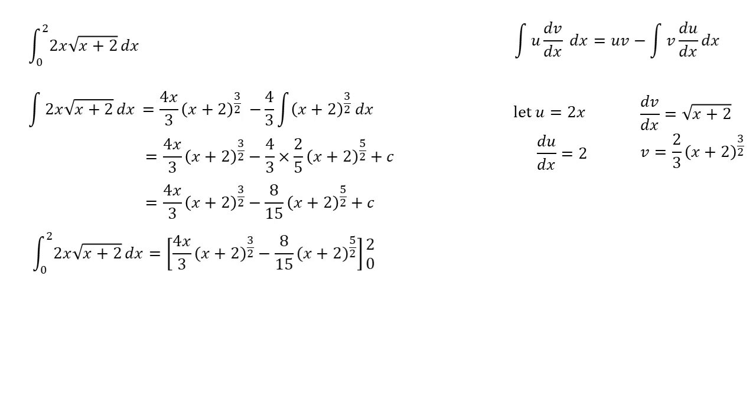So here we are with our bounds. We put it in the square brackets with the 2 and the 0 on the end. And what we're going to do now is we're going to substitute the 2 in and then we're going to take away the same thing, but with the 0 in there. So substituting the 2 in, the 4x over 3 becomes 8 over 3. The bracket becomes 4 to the power of 3 over 2. And then the second term becomes 8 fifteenths times 4 to the power of 5 over 2.